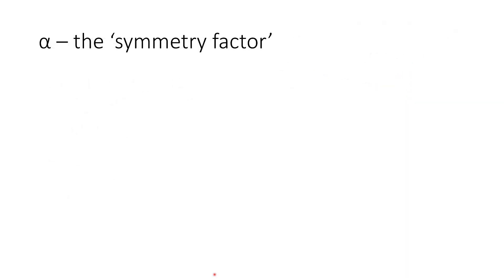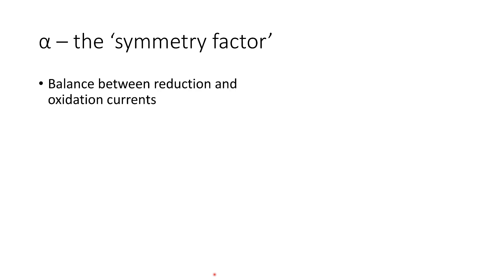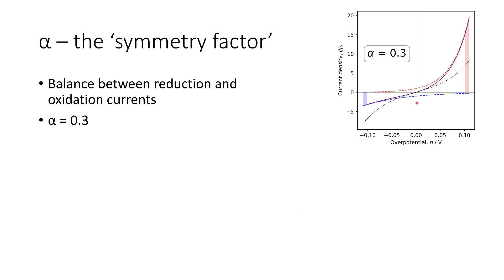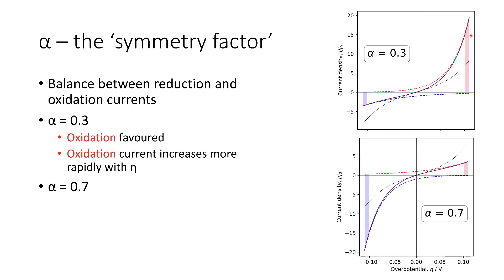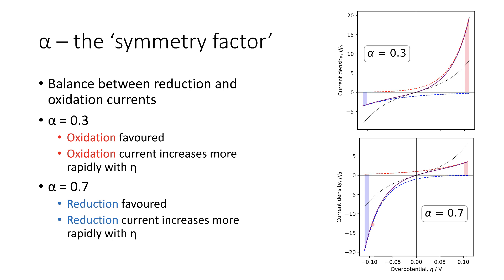The symmetry factor can be a source of some confusion. We introduced it earlier as a free energy contribution from the reductive process, but it's simply a balance between oxidation and reduction currents. At very low alpha, the oxidative current responds much more readily to the applied overpotential than the reductive current, so oxidation is favoured at low alpha and increases much more rapidly with the applied overpotential. If we consider alpha of 0.7, the reverse is true: the reduction process is favoured and reduction current increases much more rapidly with eta.